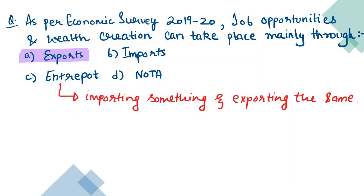Now answer this question: As per Economic Survey 2019-20, job opportunities and wealth creation can take place mainly through export, import, entrepôt, or none of the above? The correct answer is exports.